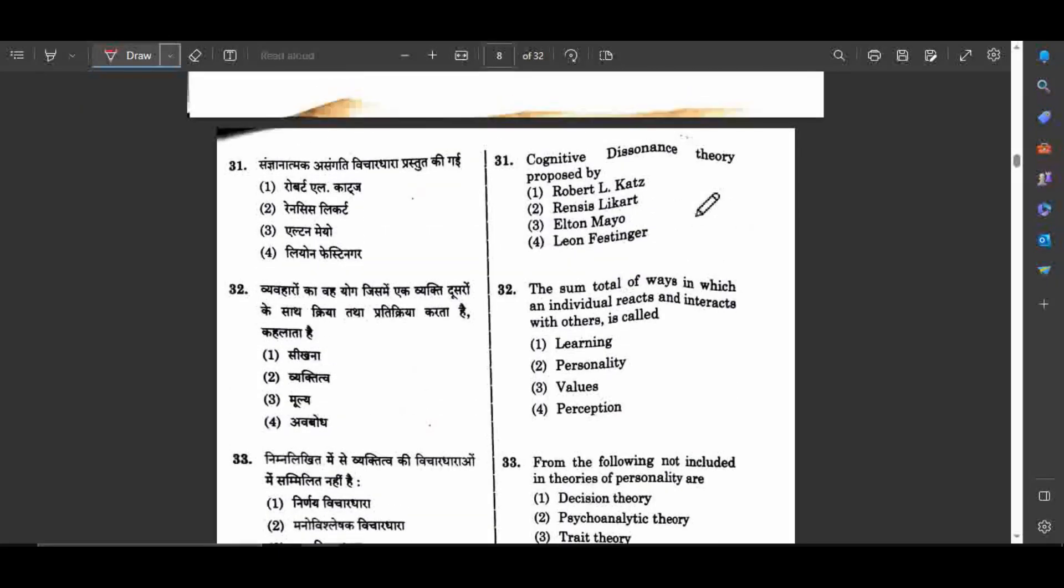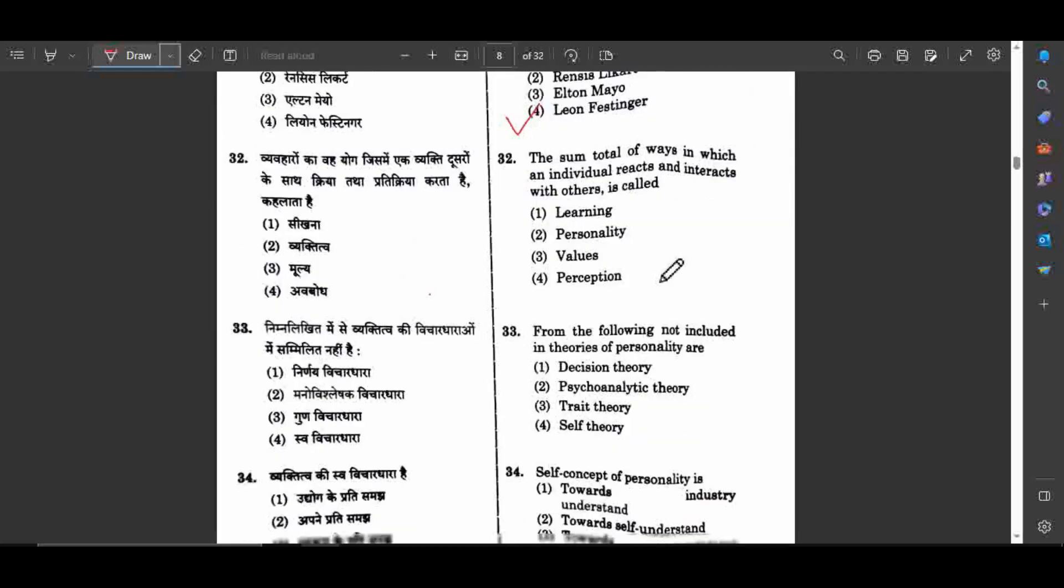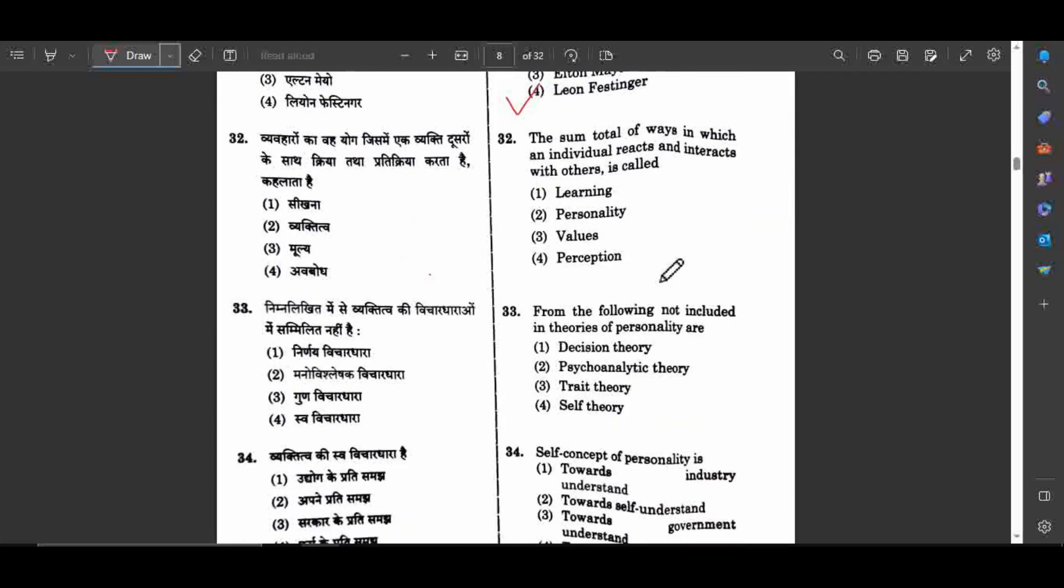Question number 31: Cognitive dissonance theory was proposed by Leon Festinger. The correct answer is Leon Festinger. Question number 32: The sum total of ways in which an individual reacts and interacts with others is called personality. The answer is personality.